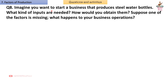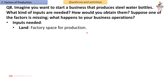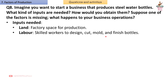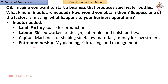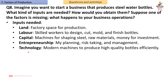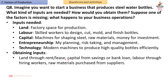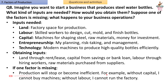Question 8: Imagine you want to start a business producing steel water bottles. What inputs are needed and how would you obtain them? Suppose one factor is missing — what happens? Answer — Inputs needed: Land (factory space), Labor (skilled workers to design, cut, mold, and finish bottles), Capital (machines for shaping steel, raw materials, money for investment), Entrepreneurship (planning, risk-taking, management), and Technology (modern machines for high-quality production). Obtaining inputs: Land through rent or lease, capital from savings or bank loans, labor through hiring, raw materials from suppliers. If one factor is missing, production will stop or become inefficient. Without capital, you cannot buy machines; without labor, you cannot run the factory.